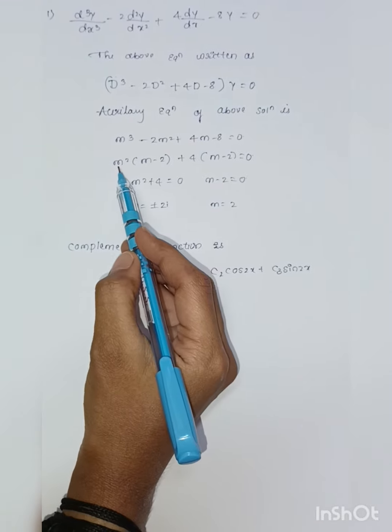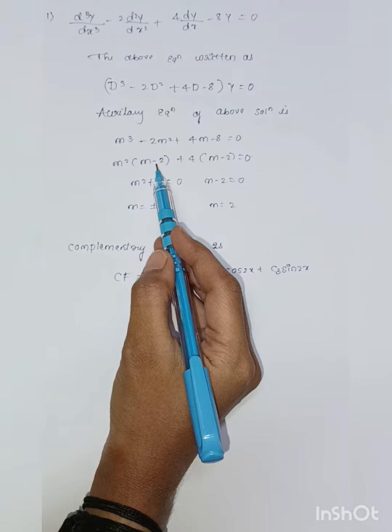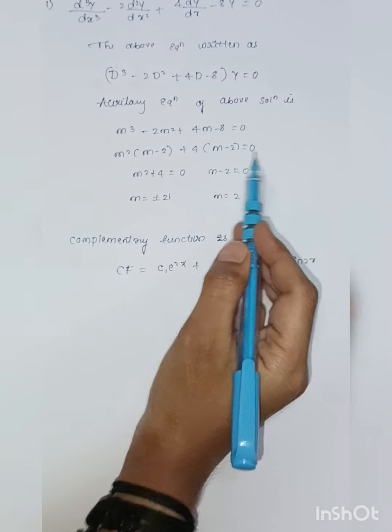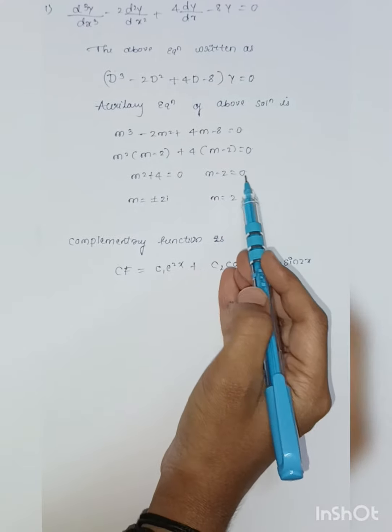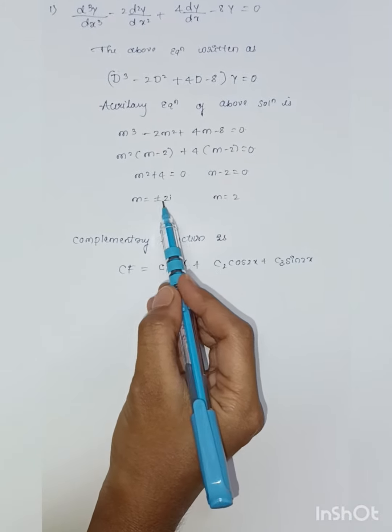Here m squared is taken common: m squared(m minus 2) plus 4 is taken common (m minus 2) is equal to 0. This gives m squared plus 4 is equal to 0, m minus 2 is equal to 0, so m is equal to plus or minus 2i.